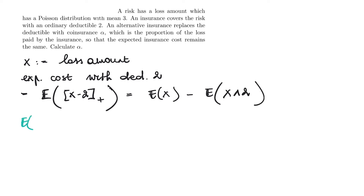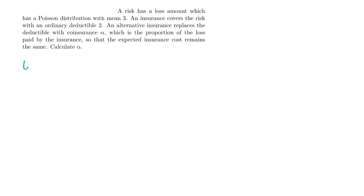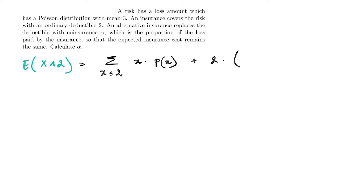The expected value of X equals the expected value of a Poisson-distributed random variable with mean 3, so this is just equal to 3. For the limited expected value, we use the following formula: we take the sum over all possible values of X less than or equal to 2 of x times P(X=x), plus 2 times 1 minus the cumulative distribution function evaluated at 2.